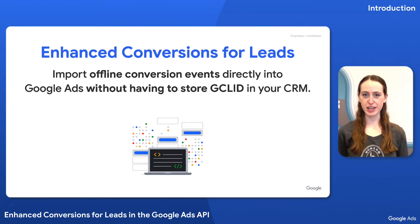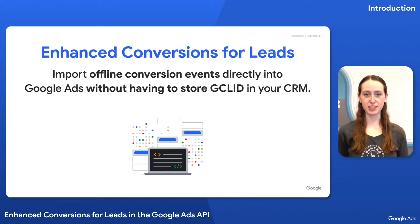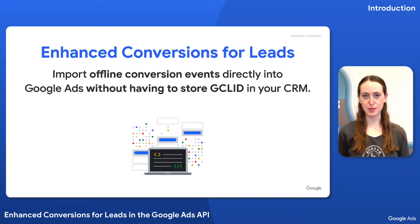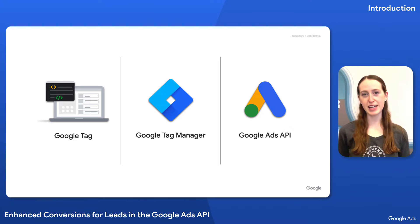It simplifies the offline conversion import process by removing the need to store and upload the GCLID, or Google Click ID, associated with the conversion. With Enhanced Conversions for Leads, you can import your offline conversions keyed by hashed PII instead of GCLID to match with the lead information sent by the Google tag when the user became a lead. You can upload Enhanced Conversions for Leads through the Google Tag, Google Tag Manager, or the Google Ads API.